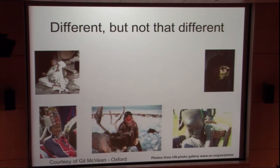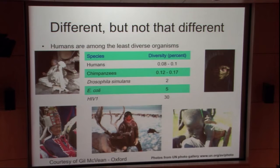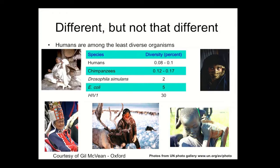Fortunately, however, that total variation rate in humans is about the smallest of any organism on the planet, with the possible exception of the cheetah and other extremely endangered animals. Humans really do have the lowest DNA diversity of any species on the planet.